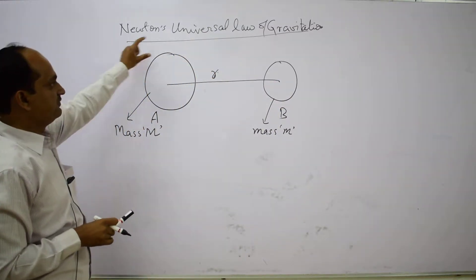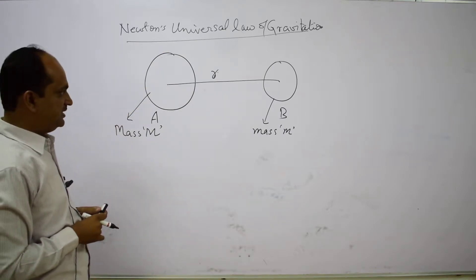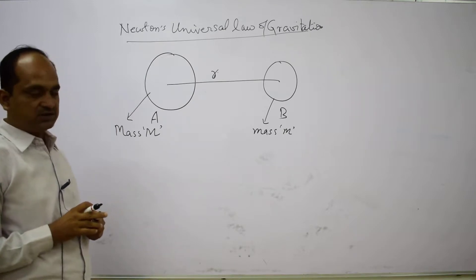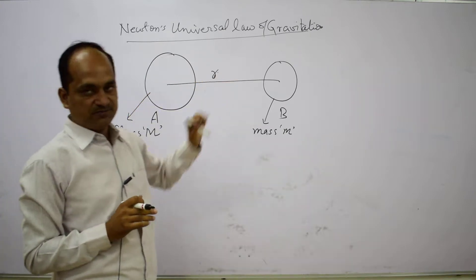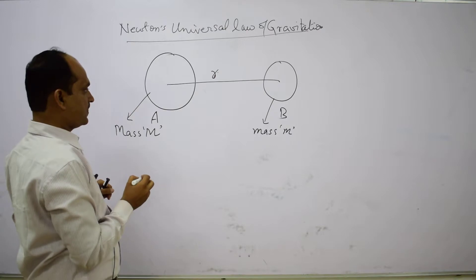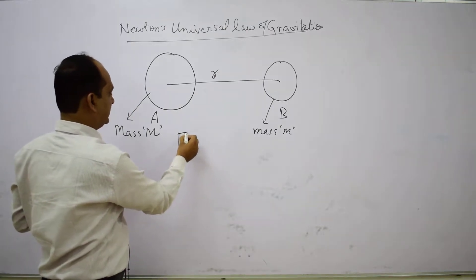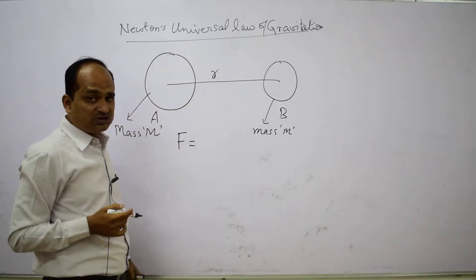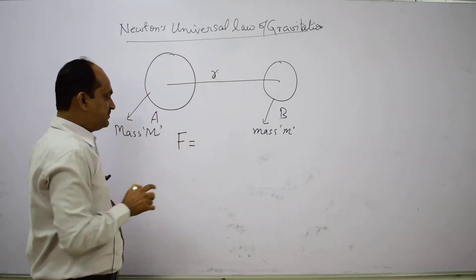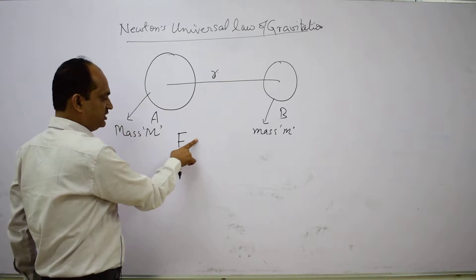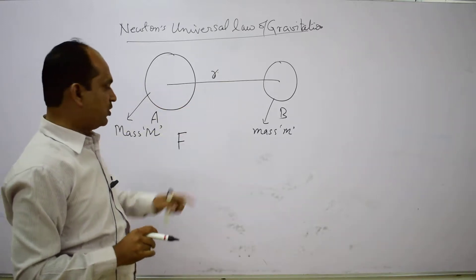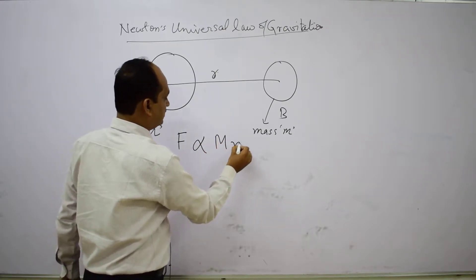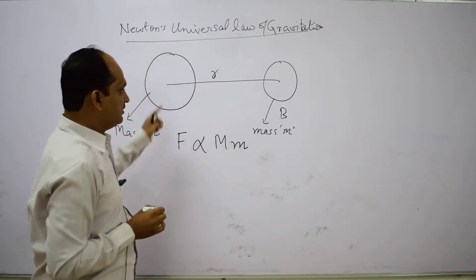Newton's universal law of gravitation states that every object in this universe attracts every other object with a force. This force is known as Newton's universal force or force of attraction. He explained that the force of attraction between any two bodies is directly proportional to the product of the masses of the bodies.